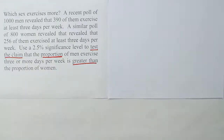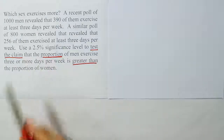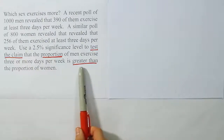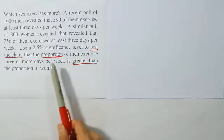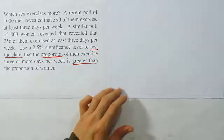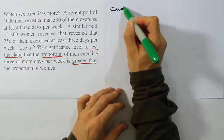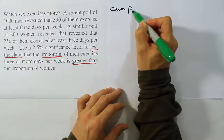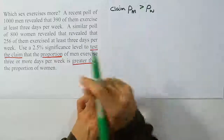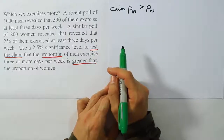I've underlined the important phrases in the problem. 'Test the claim' means we're dealing with a hypothesis test, and it says to test the claim about the proportion. The phrase 'greater than' is also important — they're saying the proportion of men who exercise more than three days per week is greater than the proportion for women. So our claim is that the proportion of men who exercise at least three days per week is greater than that for women.